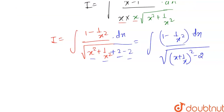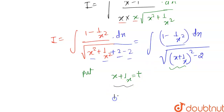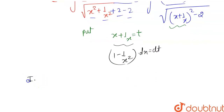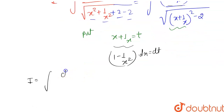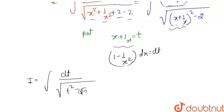Now let's solve this integration by substitution. Put x + 1/x equal to t. Differentiating both sides, we get (1 - 1/x²) dx = dt. So our integration I becomes ∫ dt divided by under root of t² minus (√2)².